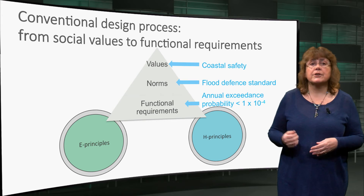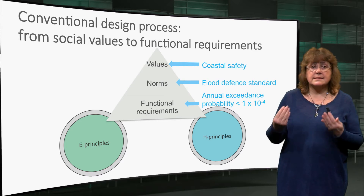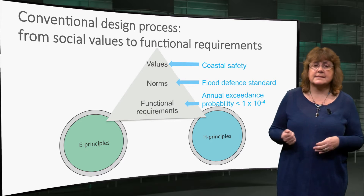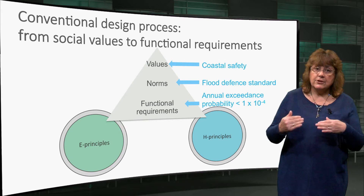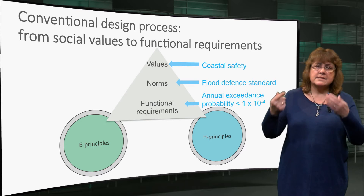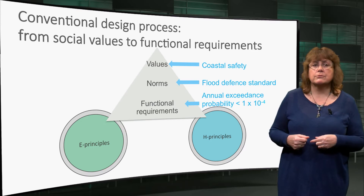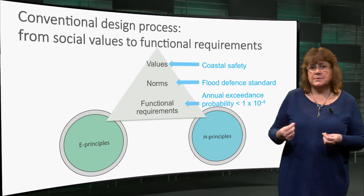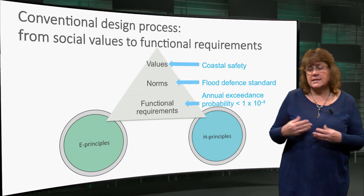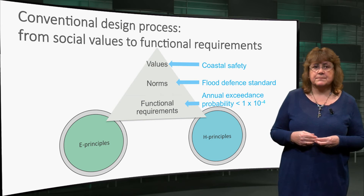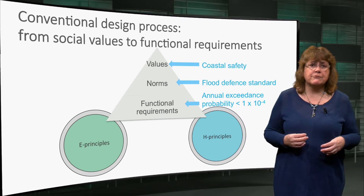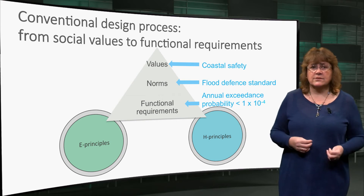Take the issue of coastal safety. This societal value is captured in a Dutch flood defence standard. For a particular location, such as the dunes on the South Holland coast, this is specified further into a functional requirement to withstand a storm surge with an annual exceedance probability of 1 in 10,000. We are very familiar with this process of designing hydraulic infrastructure to meet societal needs.